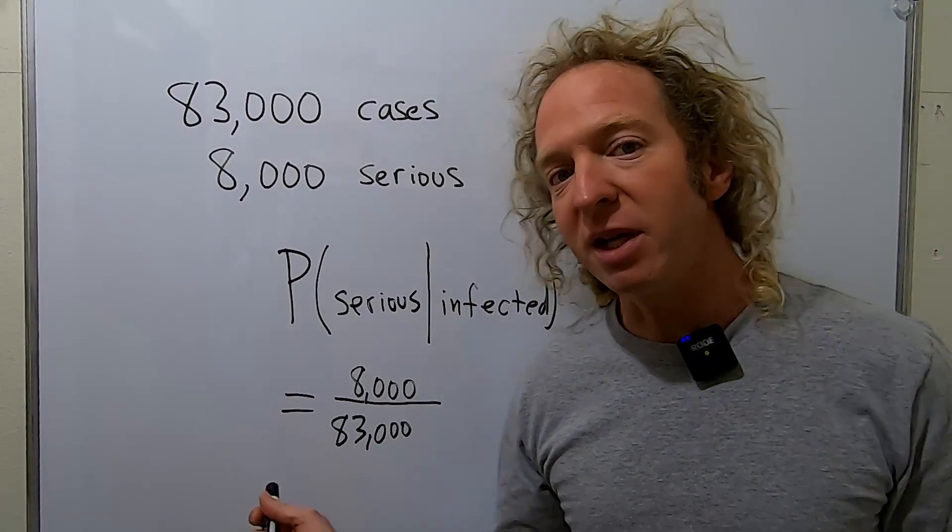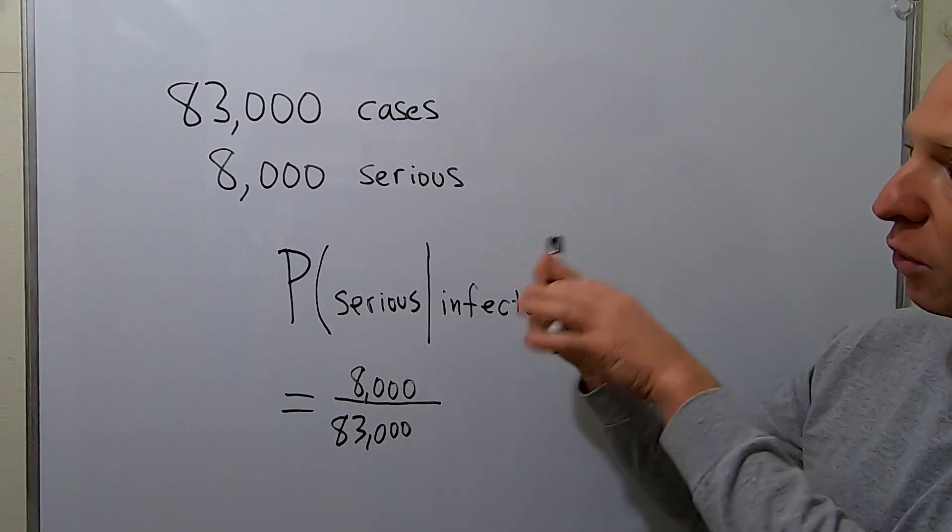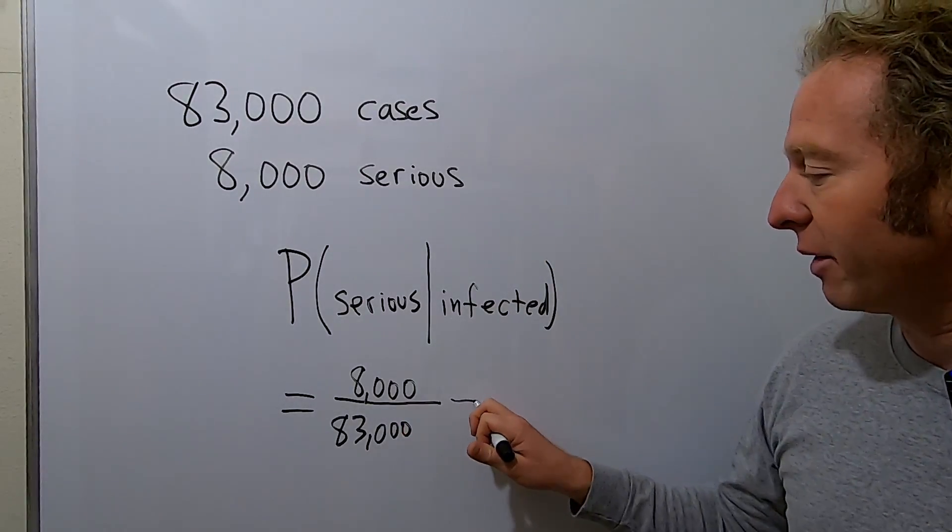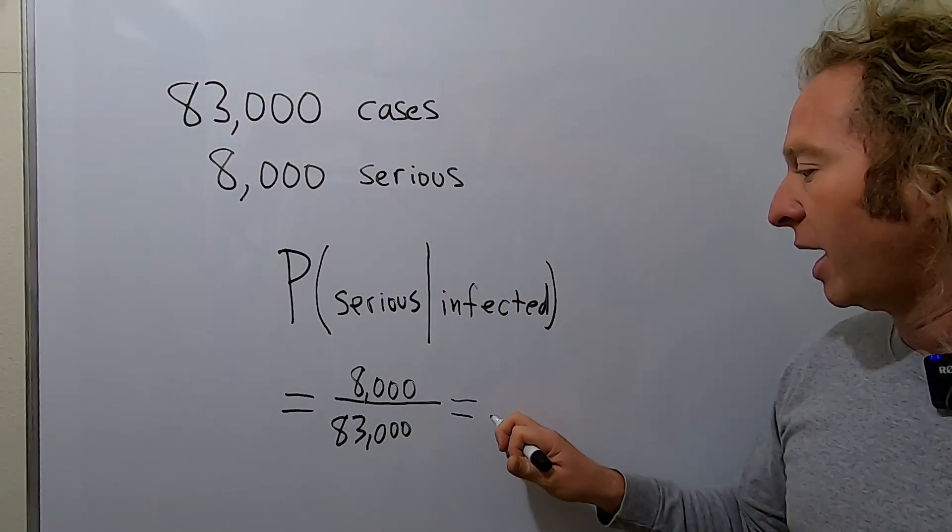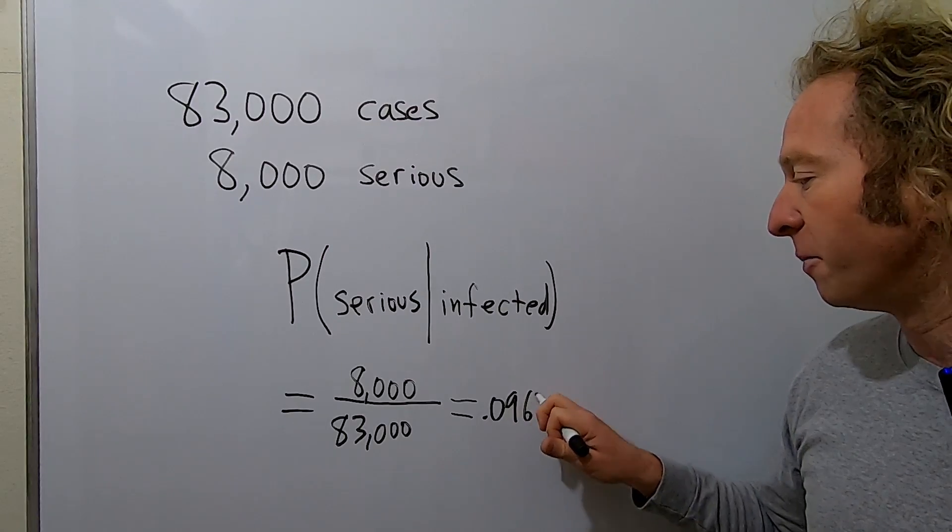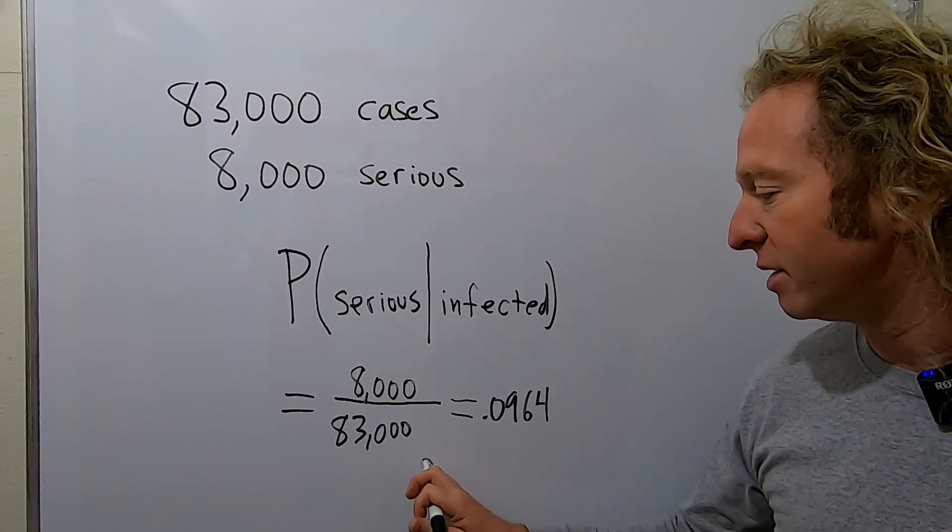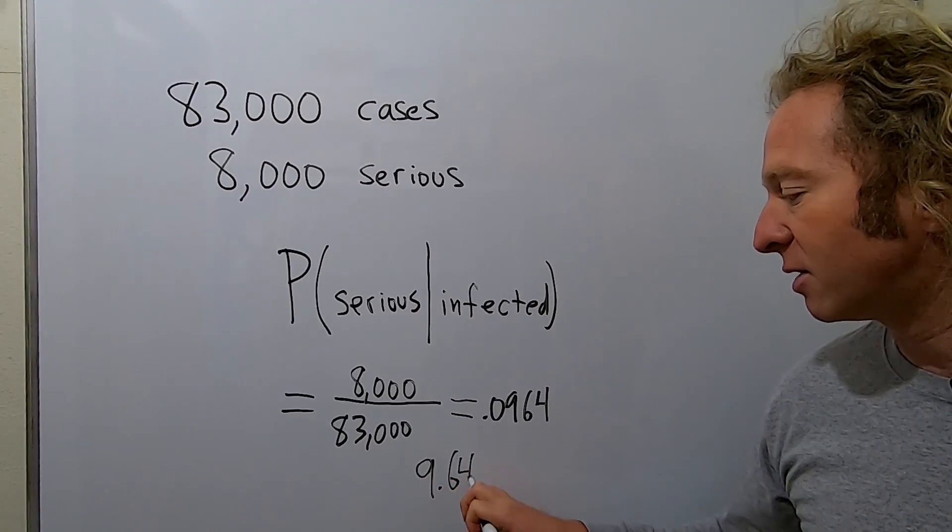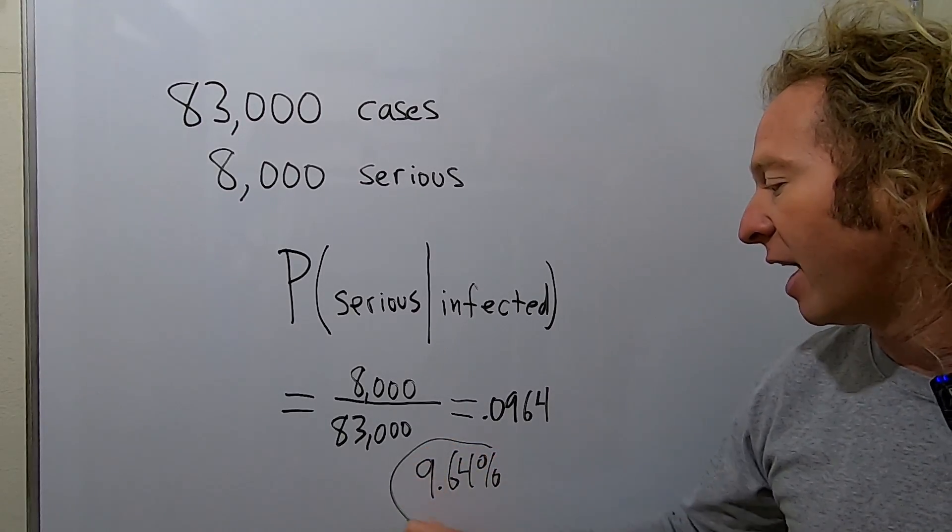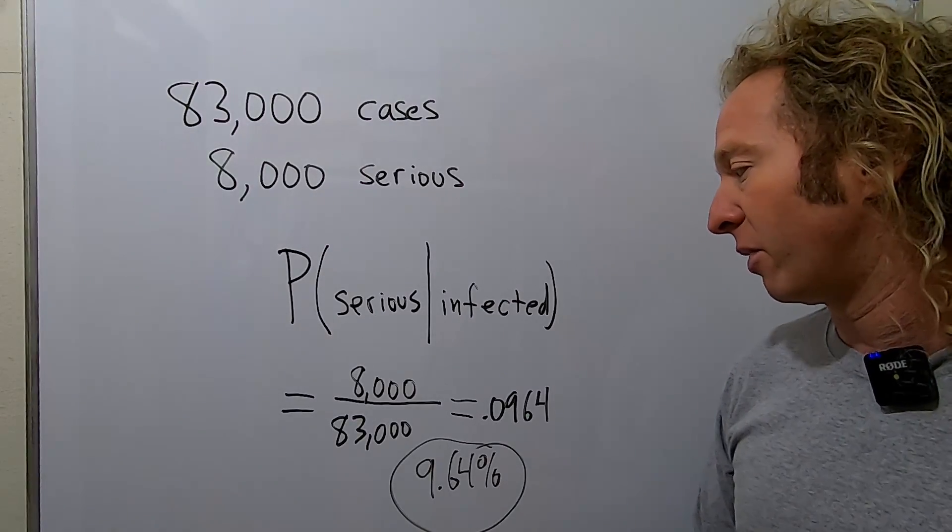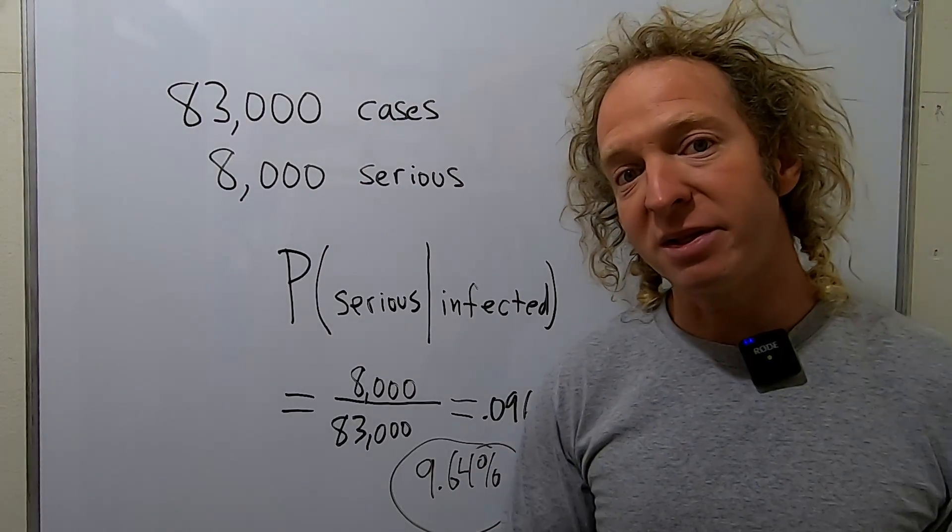So that is the probability that if you get infected with the coronavirus, your case will be a serious case. If you work this out, I worked it out beforehand and I got 0.0964. So what does this mean? Well, you can move the decimal place to the right two places, so you have a 9.64% chance that if you're infected with corona you will have a very serious case of corona. I hope that made sense, and be safe.